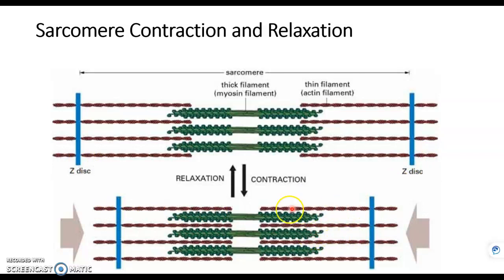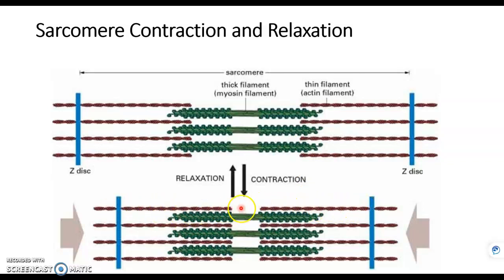How did this overlap happen? Well, those myosin heads, which we saw on the previous slide, they grab onto actin. That's called a crossbridge. And they slide actin towards the center from either side.